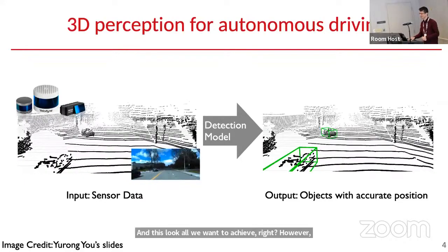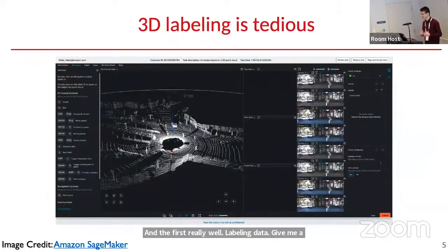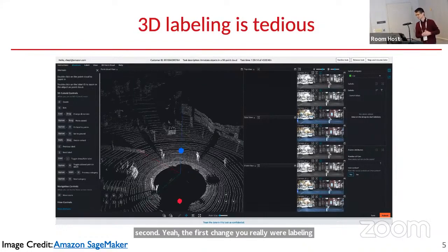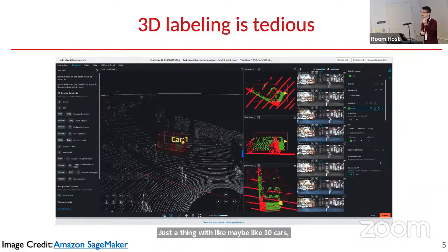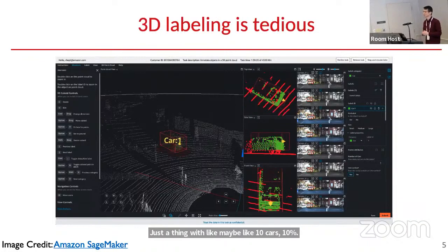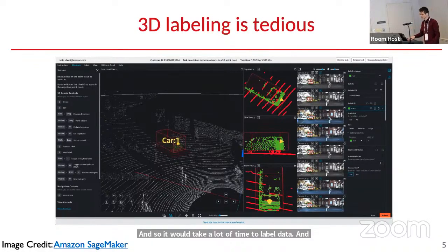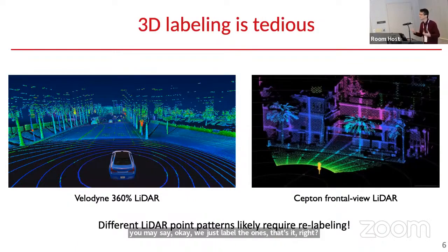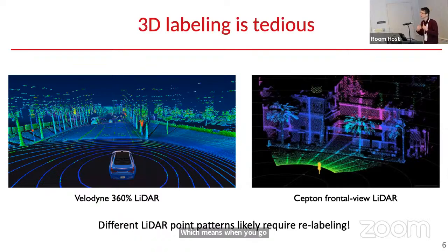Doing so has several long-standing challenges. The first is that labeling data is pretty tedious. If you want to label a scene with maybe 10 cars and 10 pedestrians, labeling just one object can take 10 to 15 seconds — not to mention the whole scene. It will take a lot of time. And as hardware advances, people are developing different sensors — like 360-degree LiDAR versus frontal view LiDAR — with very different point patterns. So when you go from one sensor to another, you may need to relabel all the data again.